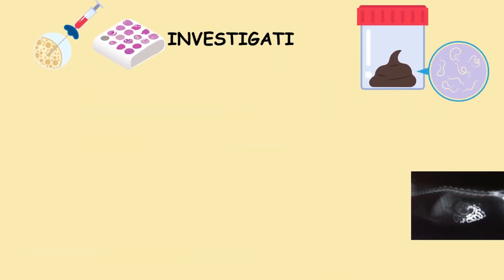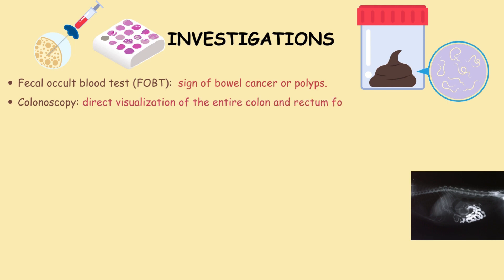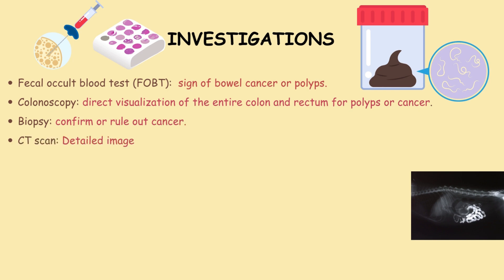Investigations include the faecal occult blood test, which helps detect potential signs of bowel cancer or polyps by identifying hidden blood in stool samples. During a colonoscopy, the entire colon and rectum are visually examined for polyps or cancer. A biopsy is performed to confirm or rule out cancer through tissue sample examination. CT scans provide detailed images of the abdomen and pelvis, aiding in the staging of colorectal cancer.